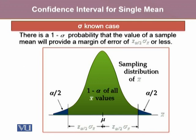In this figure, we can see the sampling distribution of x-bar represented as a normal curve, because the sampling distribution of x-bar is normal. The green area shows that 1-alpha of all x-bar values falls in this region, which is z alpha by 2 times sigma x-bar on both sides of mu.